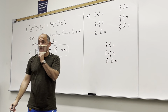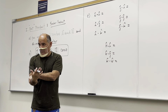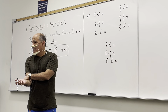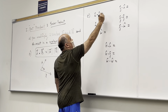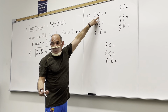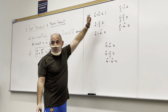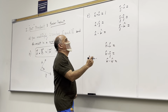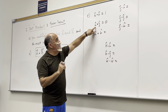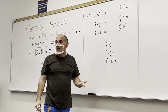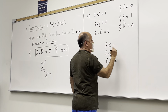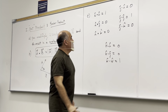How much is i-hat dot i-hat? It will be the magnitude of i-hat, which is 1, times the magnitude of i-hat, which is 1, times the cosine of the angle between them — cosine of 0° is 1. So 1 × 1 × 1 = 1. How much is i-hat dot j-hat? That's 0, because the magnitude of i-hat is 1, the magnitude of j-hat is 1, but the angle between them is 90°, and cosine of 90° = 0. So the pattern gives: i·i = 1, i·j = 0, i·k = 0, j·i = 0, j·j = 1, j·k = 0, k·i = 0, k·j = 0, k·k = 1.